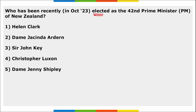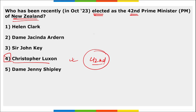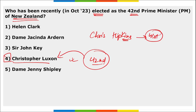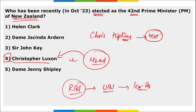Christopher Luxon has been elected as the 42nd Prime Minister of New Zealand, succeeding Chris Hipkins who was the 41st. RBI imposed a penalty of 1 crore rupees on Union Bank of India.